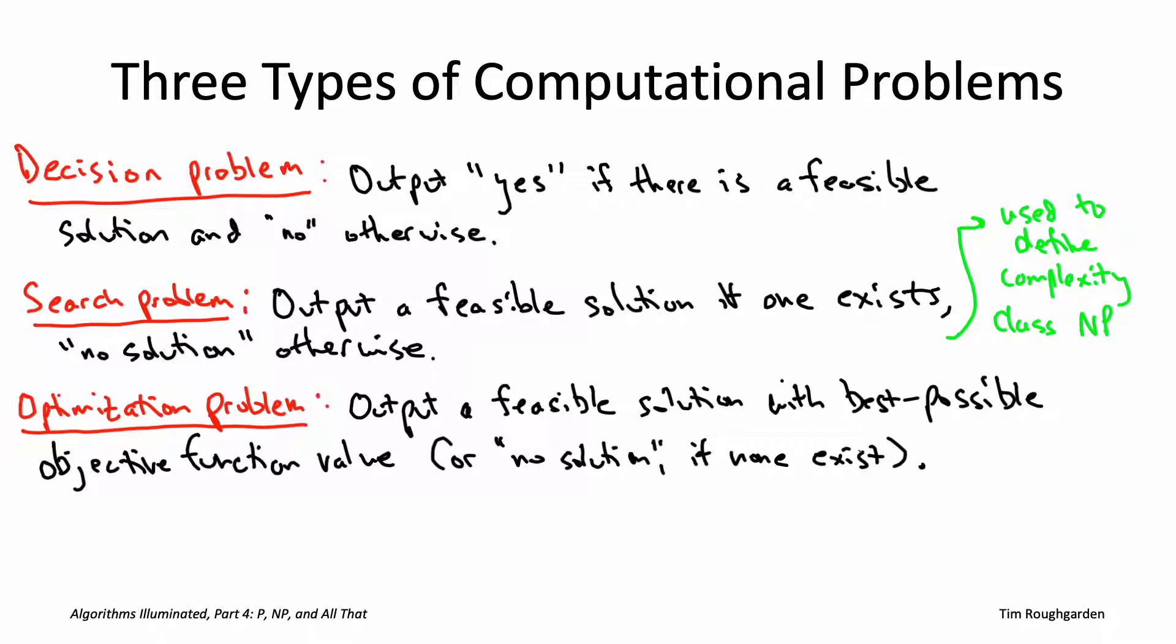The reason they do that is because it's more convenient for developing complexity theory. The reason I'm not doing it is because decision problems are further removed from the natural algorithmic problems that are our focus in this video playlist.